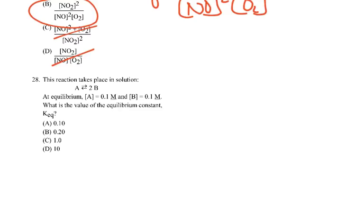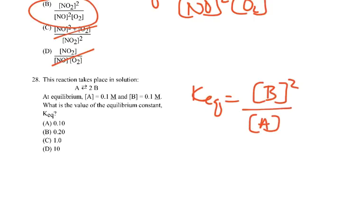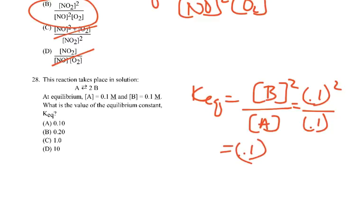Question 28: the reaction A → 2B in solution, at equilibrium [A] = 0.1 and [B] = 0.1. K_eq = [B]² / [A] = (0.1)² / 0.1 = 0.01 / 0.1 = 0.1. Answer A.